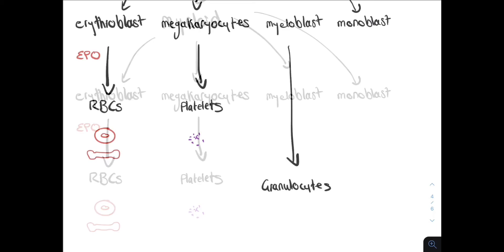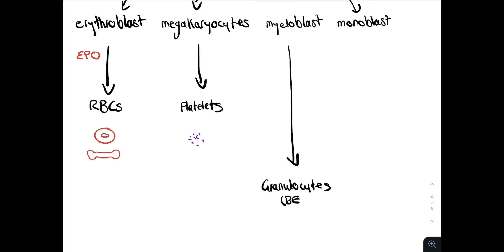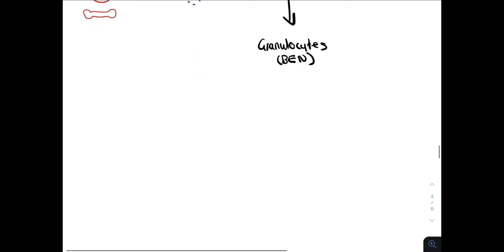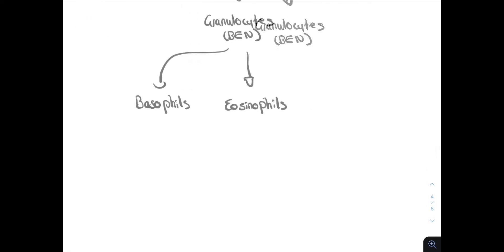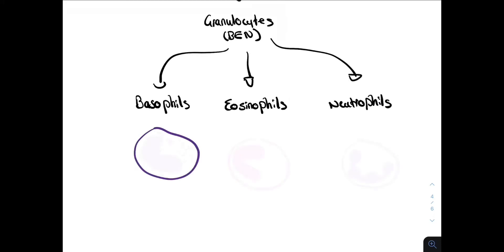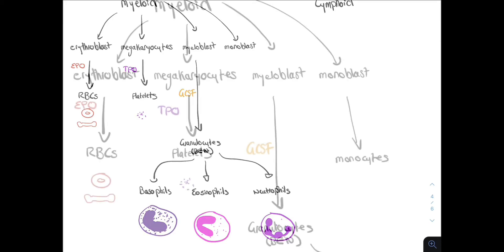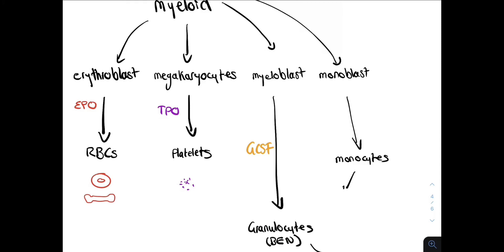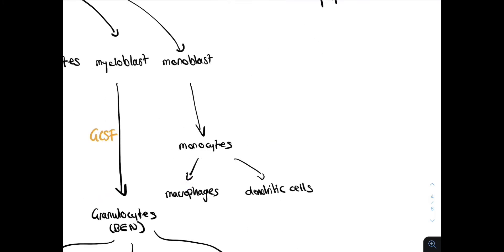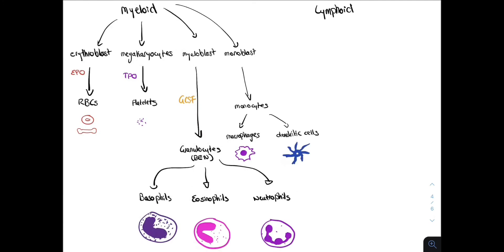Myeloblasts differentiate into granulocytes. You can remember the names of the granulocytes using the name Ben. So these are basophils, eosinophils and neutrophils. The production of granulocytes is under the influence of granulocyte colony stimulating factor or GCSF. And finally monoblasts differentiate into monocytes. These further differentiate into macrophages or dendritic cells.